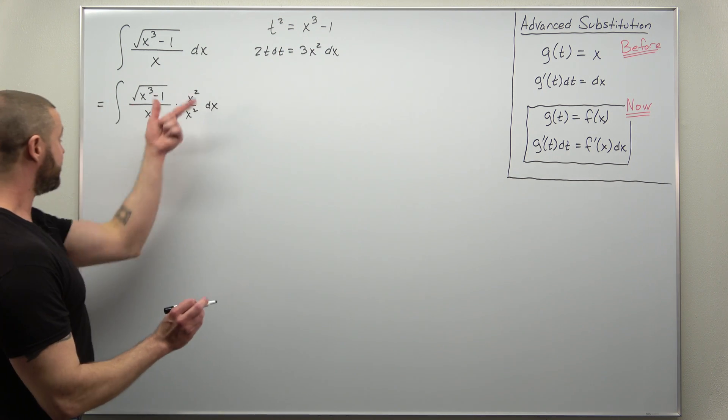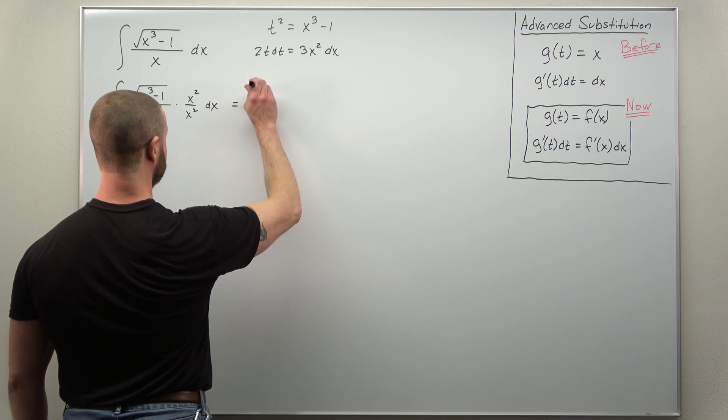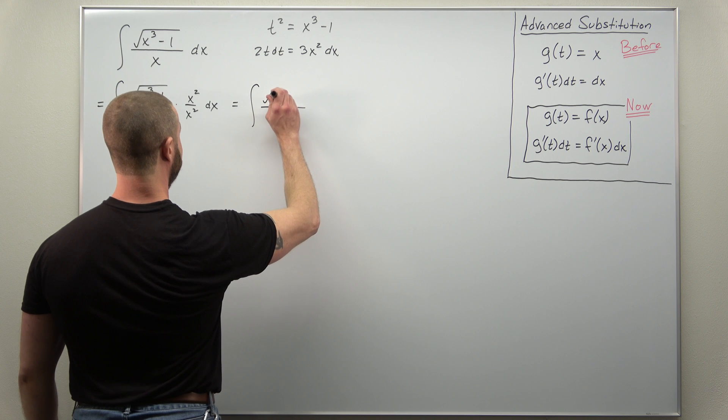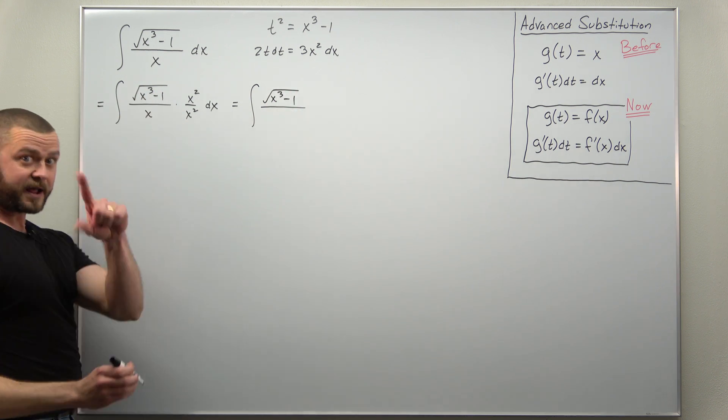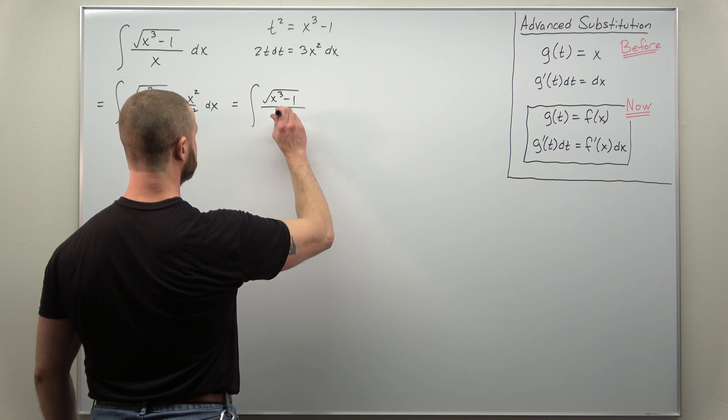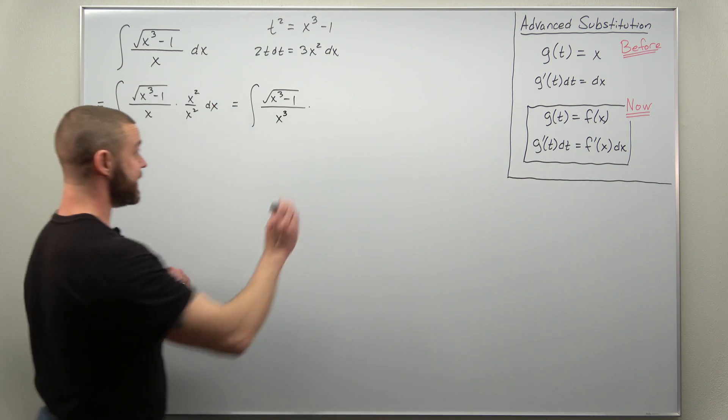We'll have the square root of x cubed minus 1 divided by x cubed and then times x squared dx.